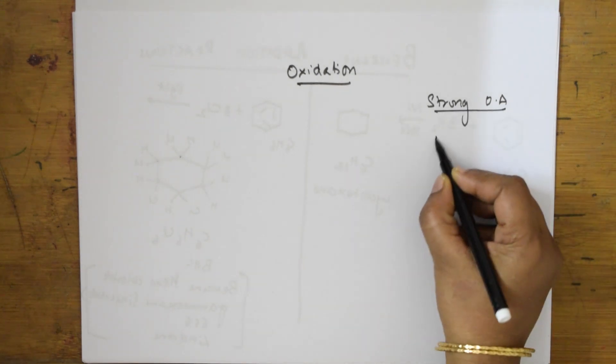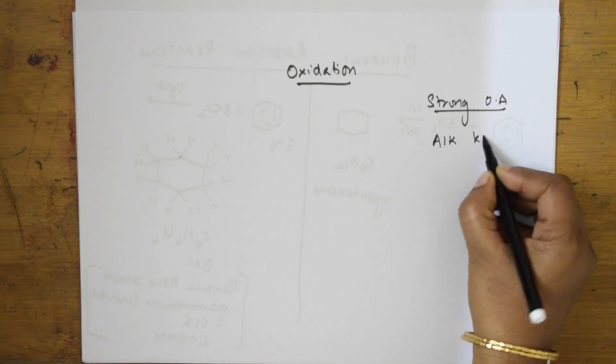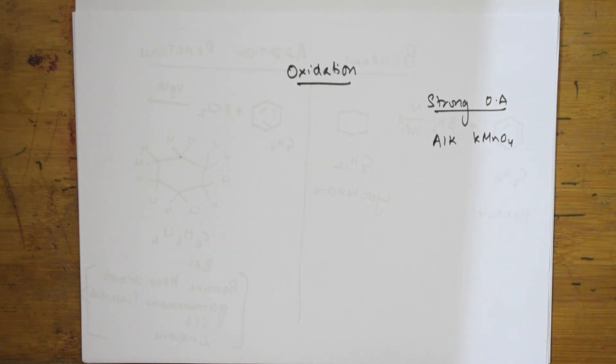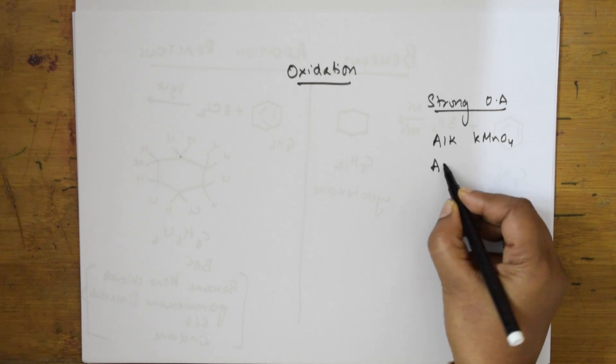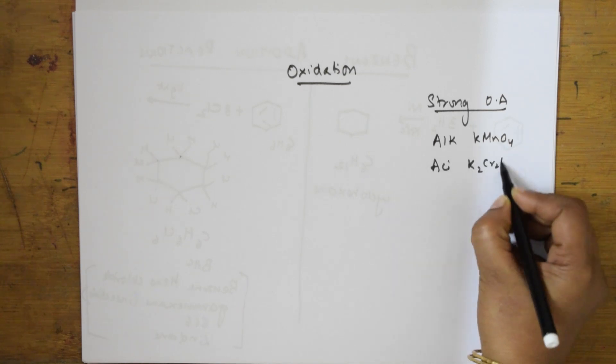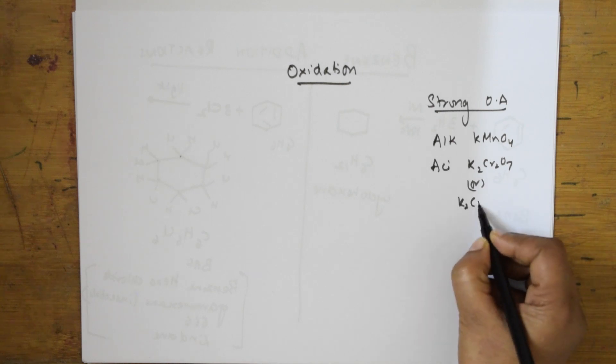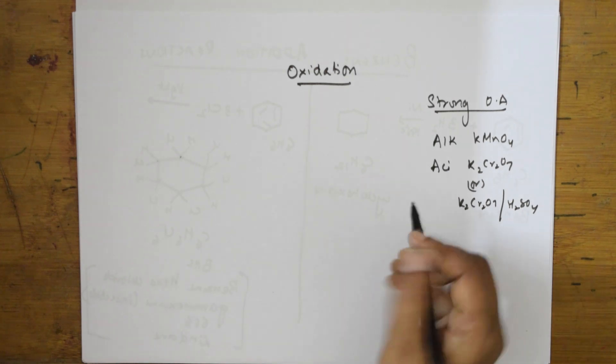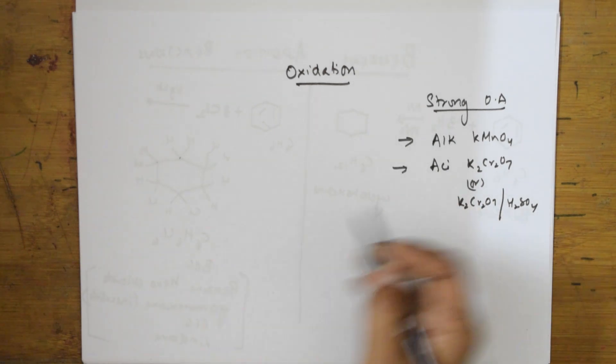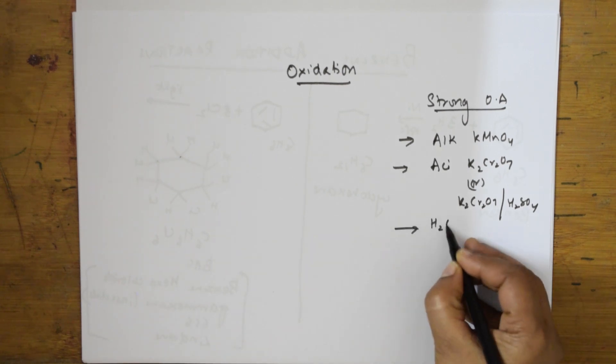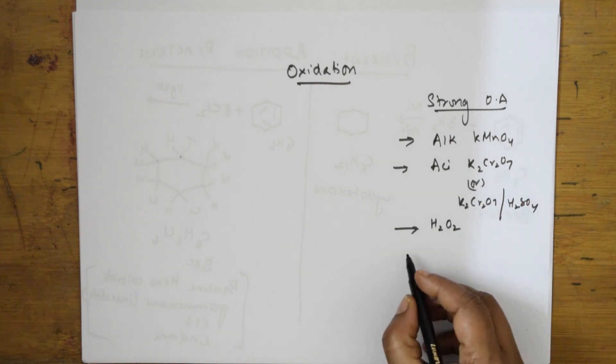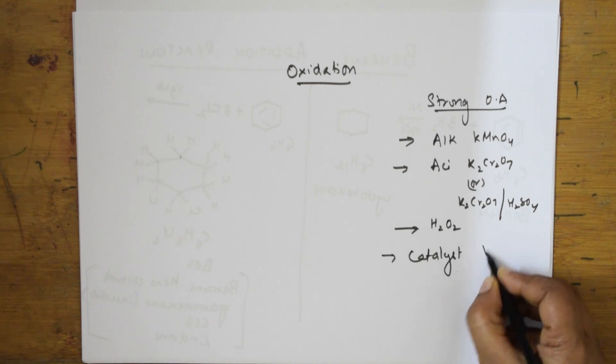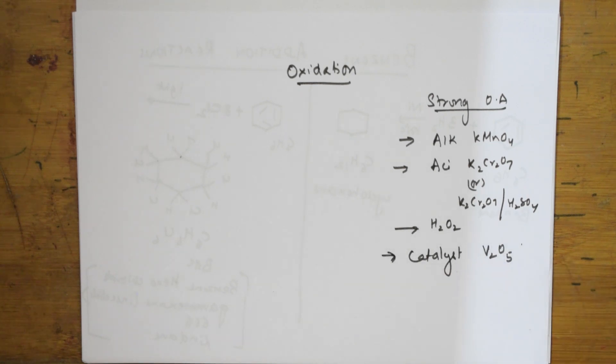So oxidizing agents: I am using alkaline KMnO4, potassium permanganate. I am using one more, acidic K2Cr2O7, that is K2Cr2O7 in the presence of an acid. We can also perform oxidation using hydrogen peroxide, but when using this you need a catalyst, vanadium pentoxide V2O5, which speeds up the reactions.